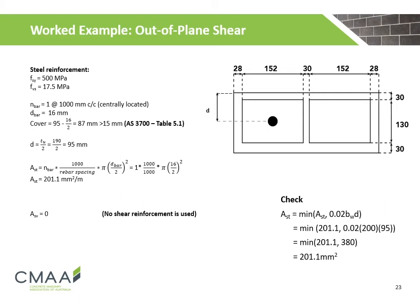The width of the grouted core is 200 mm. For steel reinforcement, N16 bars are used and spaced at 1,000 mm centres. The design yield strength of the steel Fsy is 500 MPa, and the design shear strength of the steel Fes is 17.5 MPa. As the bars are centrally located, the effective depth D is calculated to be 95 mm, given a 190 mm thick block. When calculating the area of steel, the minimum of the two cases shall be chosen, as shown on the right. Thus the area of steel is calculated to be 201.1 mm² per metre.